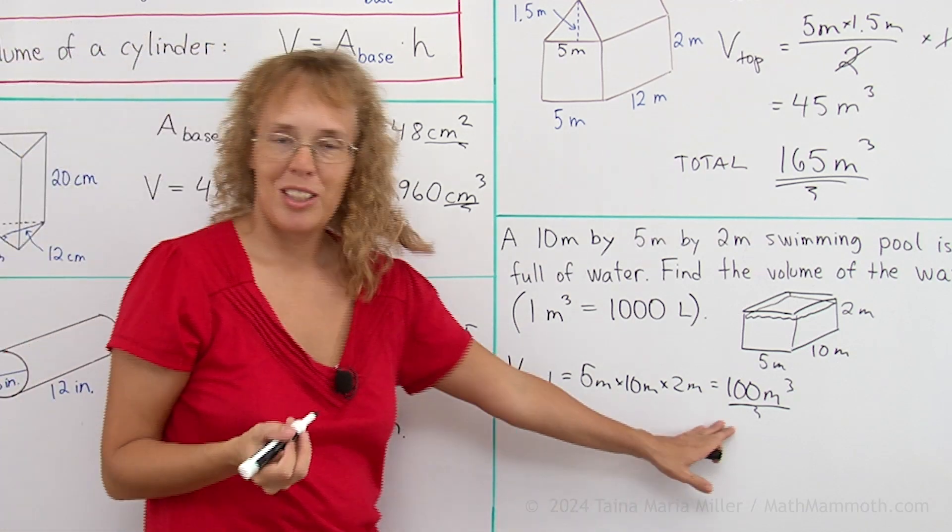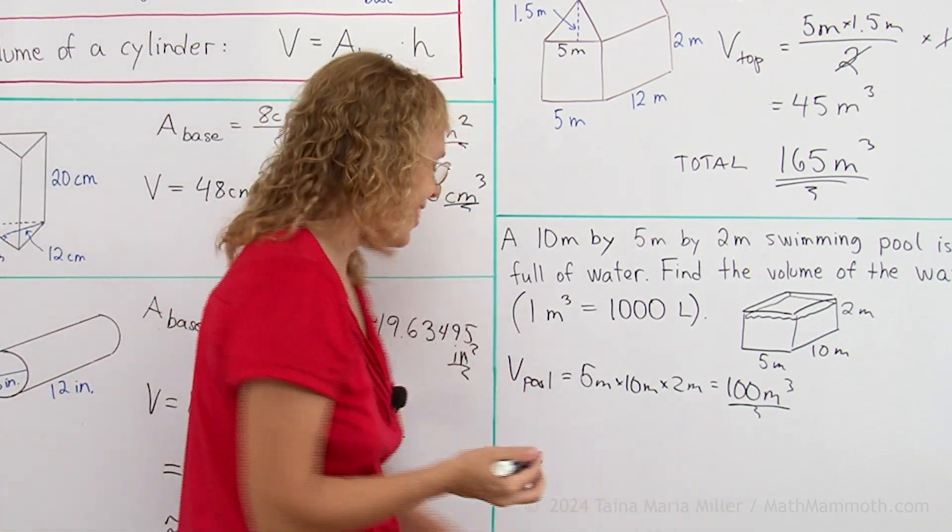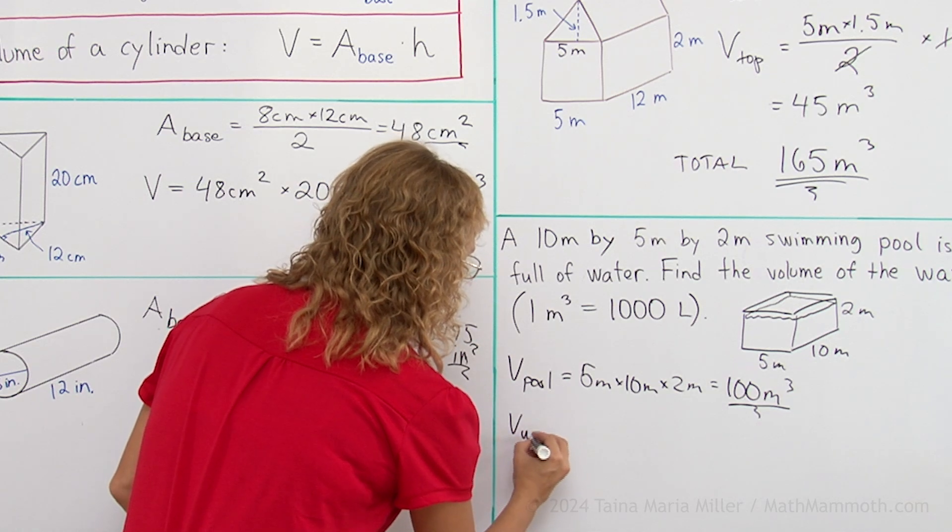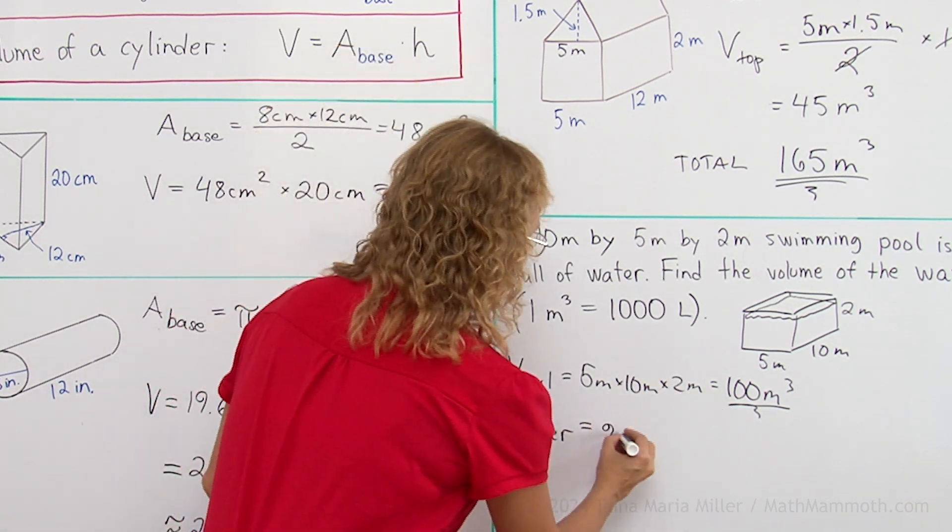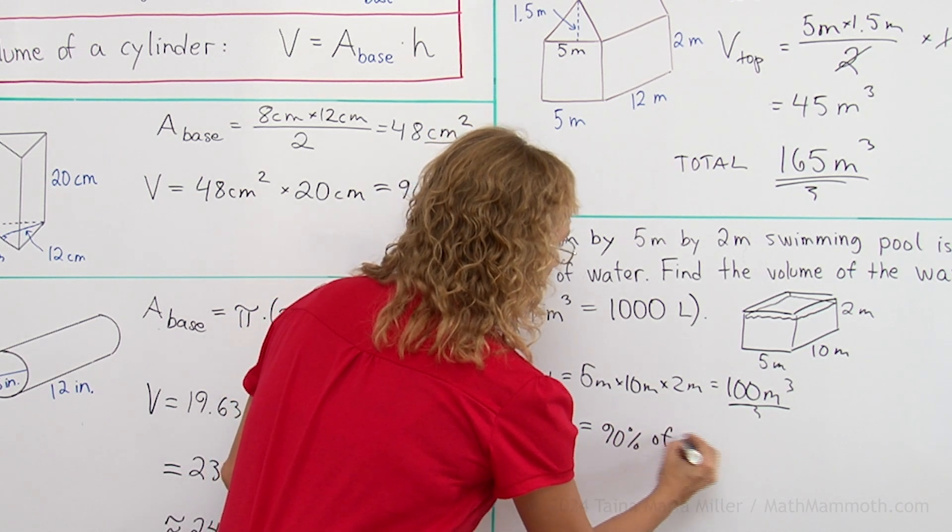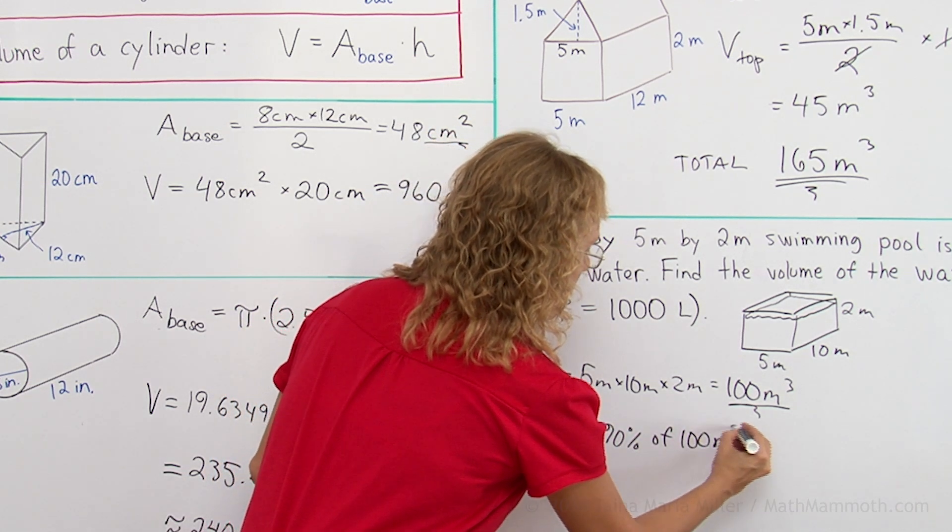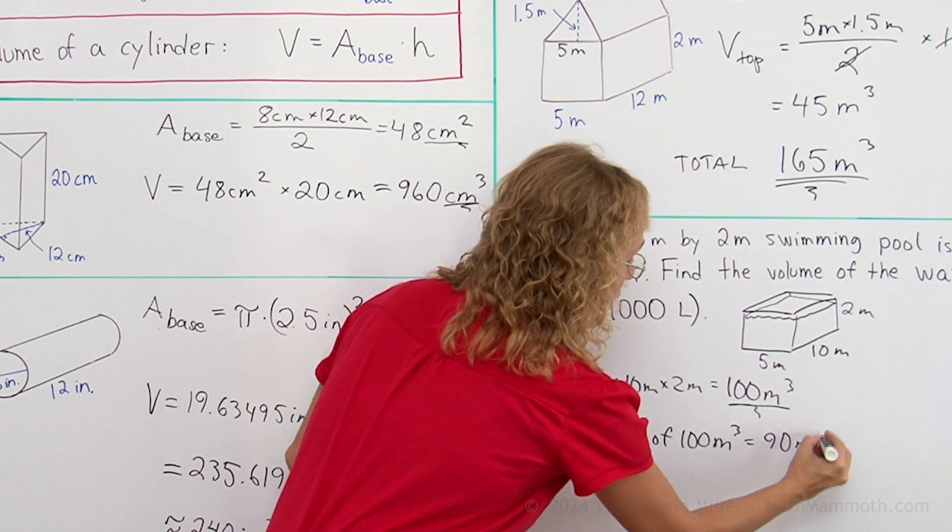So we take 90% of 100, but that's really easy, right? Volume of the water would be 90% of that number, 90% of 100, which is 90 cubic meters.